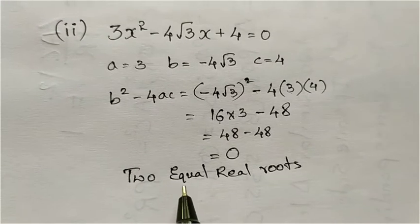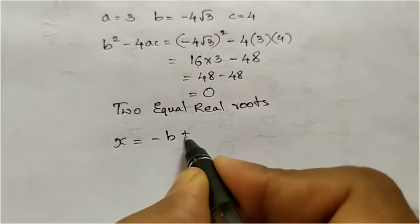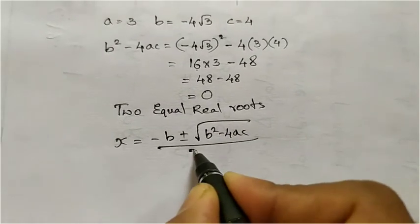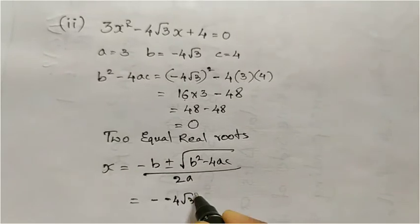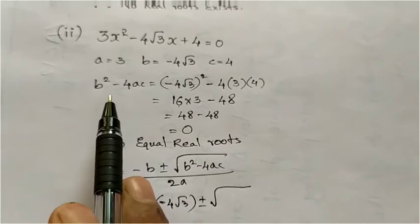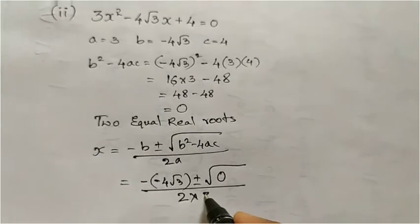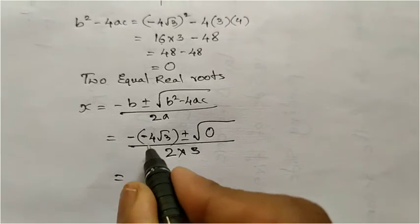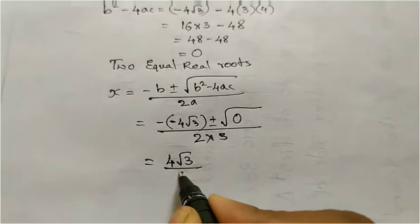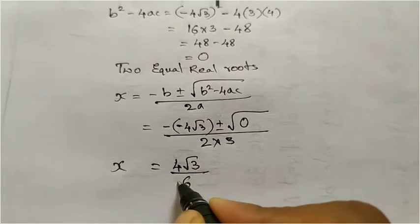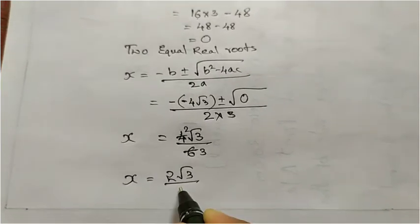The question also asks us to find the roots if they exist. Using the formula x equal to minus b plus or minus root of b square minus 4ac divided by 2a: minus b is minus of minus 4 root 3, which is plus 4 root 3; plus or minus, and b square minus 4ac is 0, so we keep 0; divided by 2 times a which is 3, giving 6. So x equals 4 root 3 plus or minus 0, all divided by 6, which simplifies to 4 root 3 over 6, giving x equal to 2 root 3 by 3.